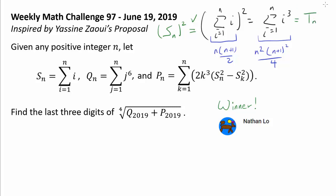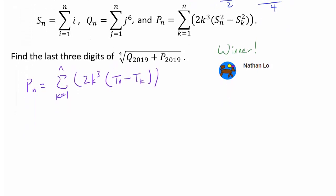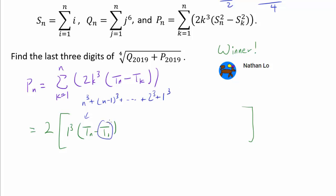So let's denote this by T_n, which allows us to write P_n as the sum from k equals 1 to n of 2k cubed times (T_n minus T_k). To understand the nature of P_n, let's expand for some values of k. Taking 2 outside the summation: when k is 1, we have 1 cubed times (T_n minus T_1). T_n is n cubed plus (n−1) cubed plus 2 cubed plus 1 cubed, and T_1 is just 1 cubed, so the 1 cubeds cancel. Thus T_n minus T_1 is the sum from 2 cubed all the way to n cubed.